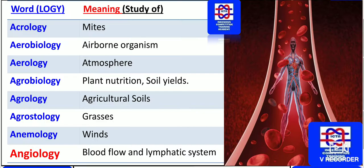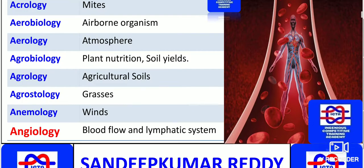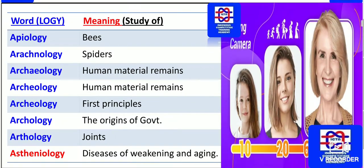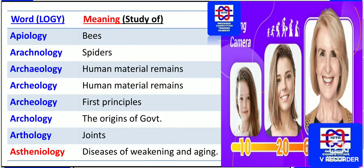Angiology means the study of blood flow and the lymphatic system. Next, we have apiology — 'api' means bees, while 'aviary' relates to birds. So apiology means the study of bees.